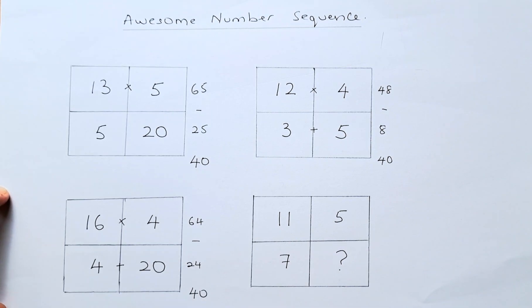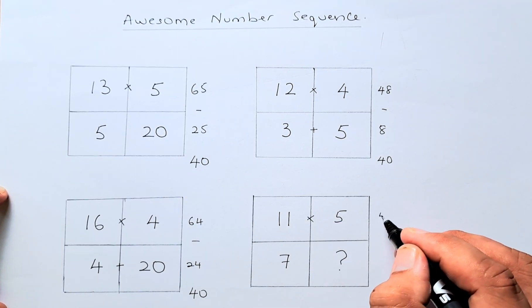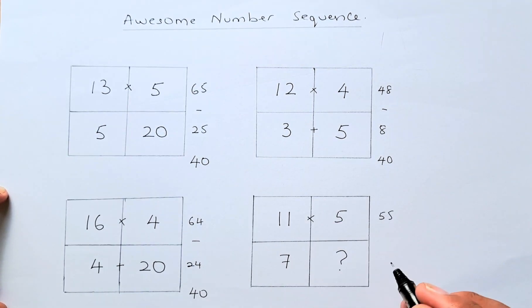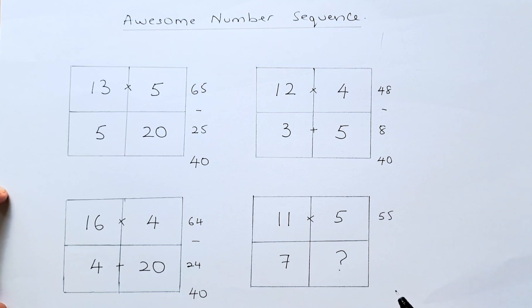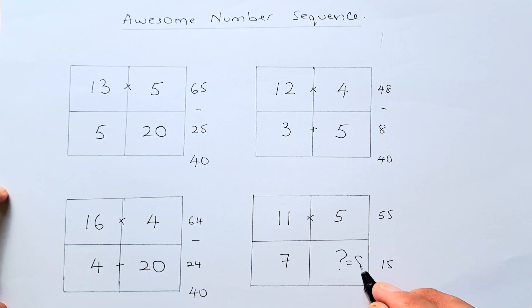The last box will have that pattern. You multiply 11 times 5, which is 55. Then 7 plus the unknown number must give a sum that, when subtracted from 55, equals 40. So that total must be 15. Therefore, 7 plus the number must give 15, so the question mark has to be 8.